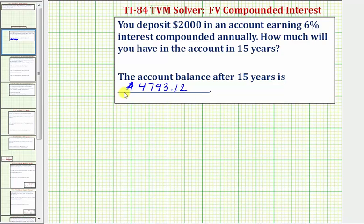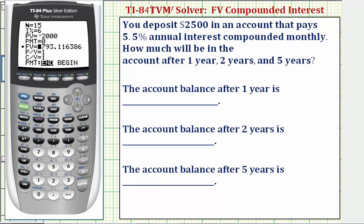Let's look at our second example. Here you deposit $2,500 in an account that pays 5.5% annual interest compounded monthly. How much will there be in the account after one year, two years, and five years?